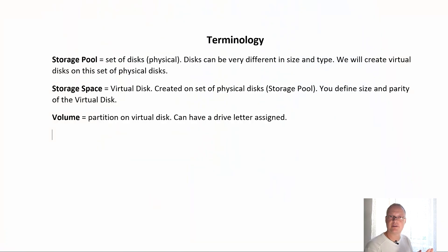Then, storage space — a storage space is in fact a virtual disk, a drive. The OS will see it as a logical drive. For a virtual disk you define things like size and parity. And then volume — a volume is a partition on a logical disk, on a virtual disk. It can have a drive letter, etc.